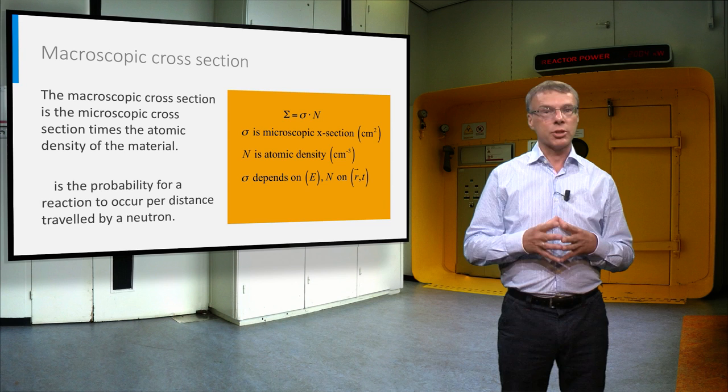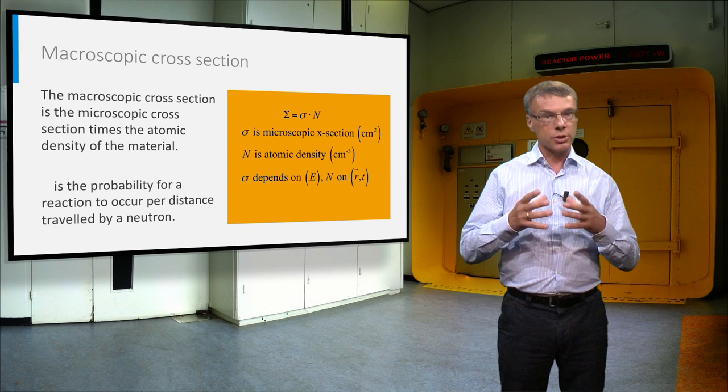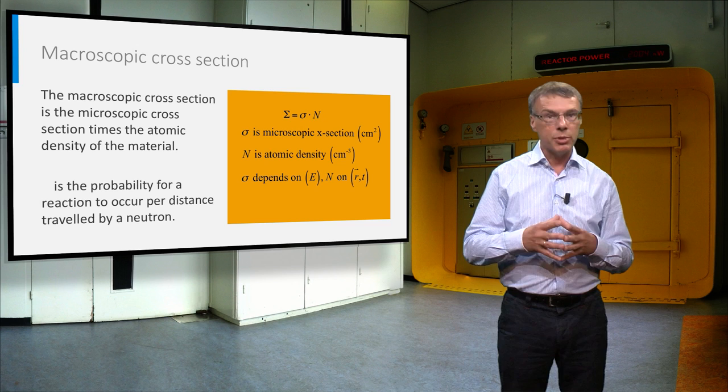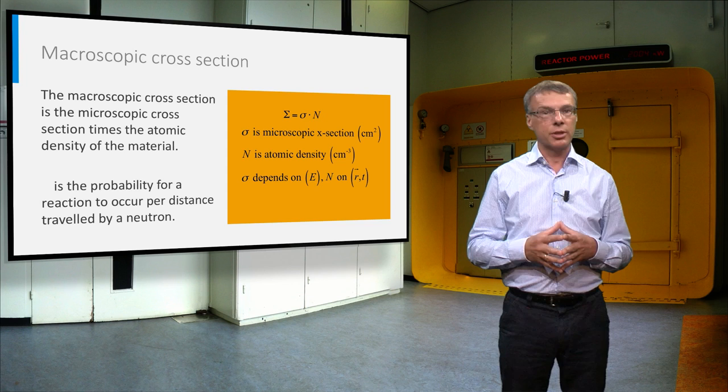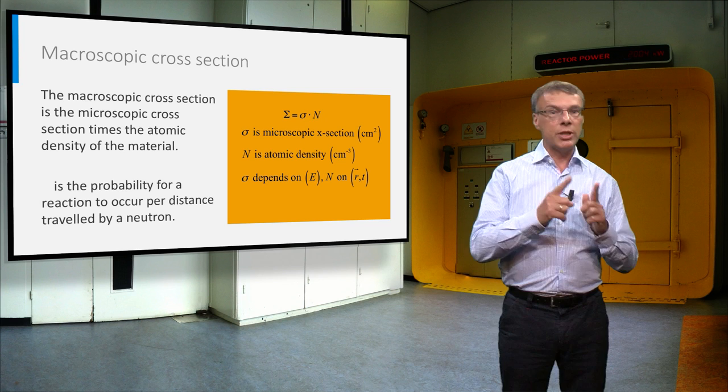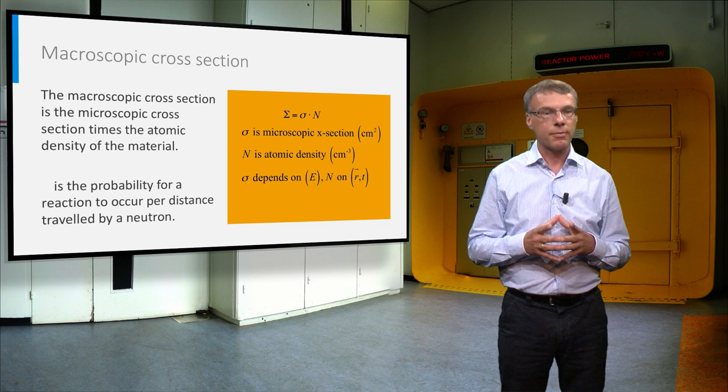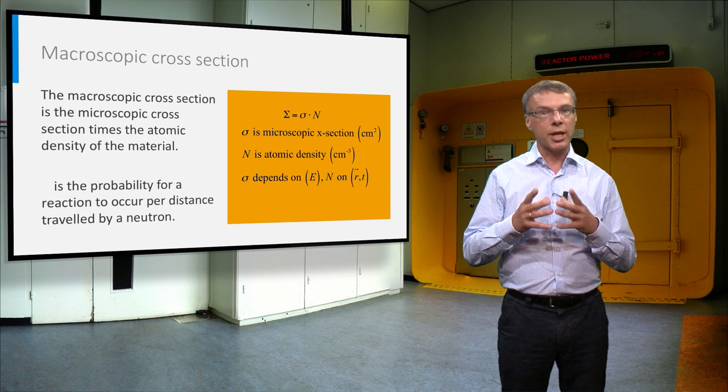Previously we have seen that a microscopic cross section of a nuclide is the effective area of the nuclide for interaction with neutrons. You can easily imagine that the number of reactions of a neutron beam with the atoms in a material will be proportional to this microscopic cross section, but also to the atomic density of the material. The product of these two factors is called the macroscopic cross section of the material. And we will use this macroscopic cross section on the next slide to calculate the reaction rate density in a material.